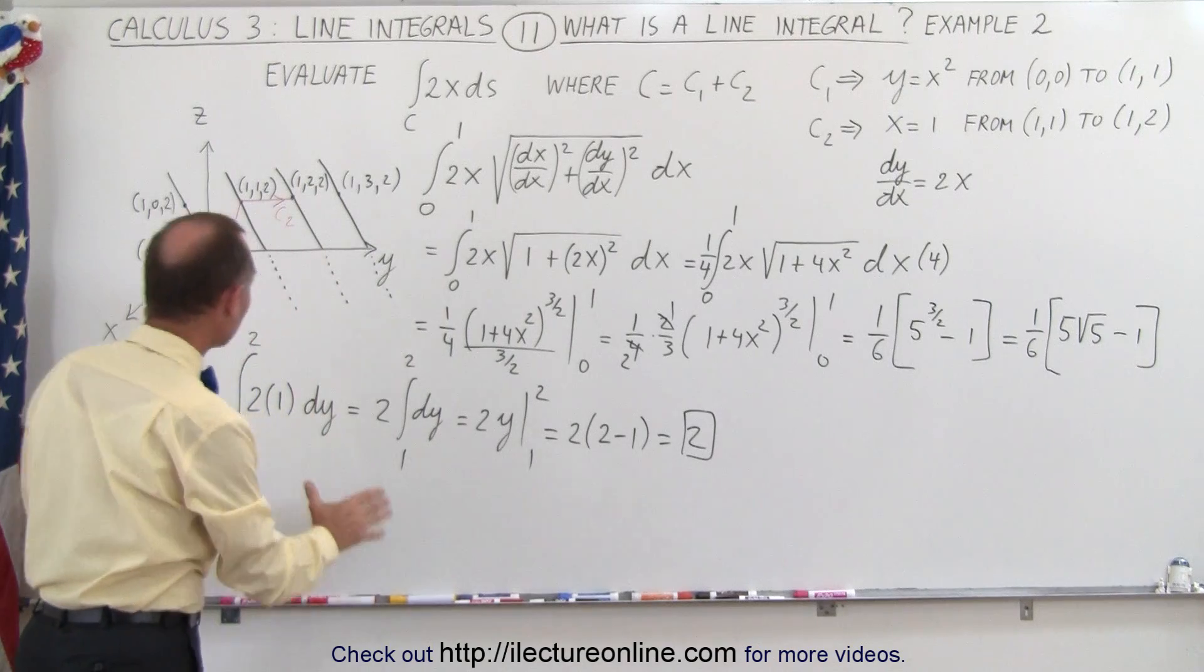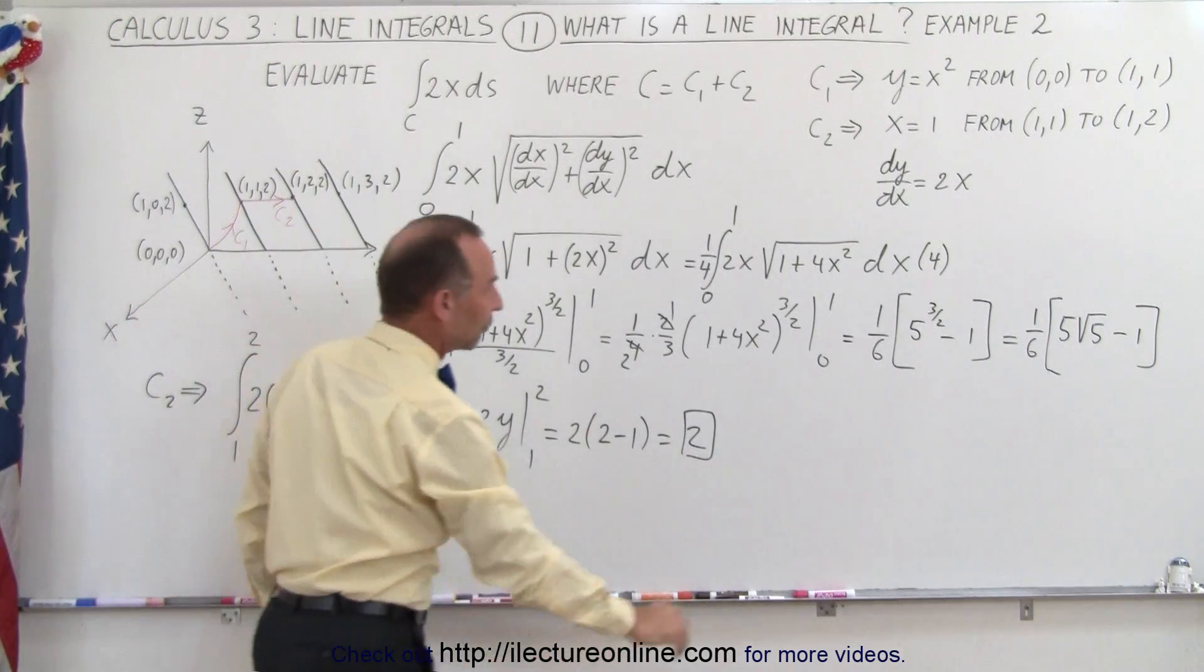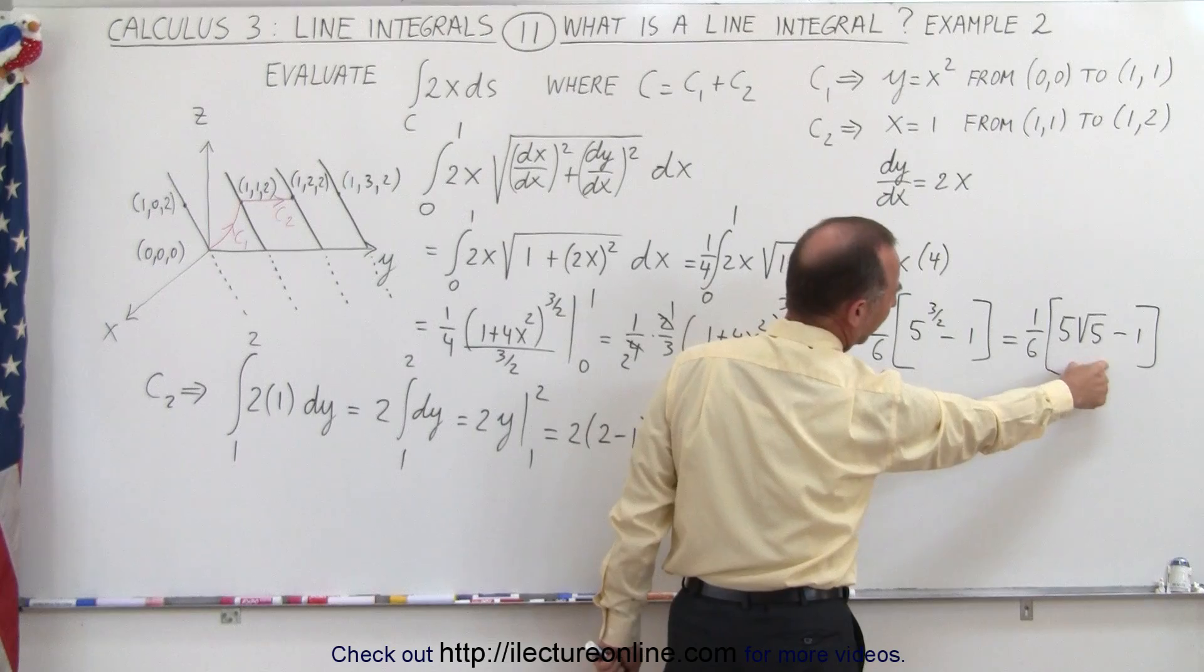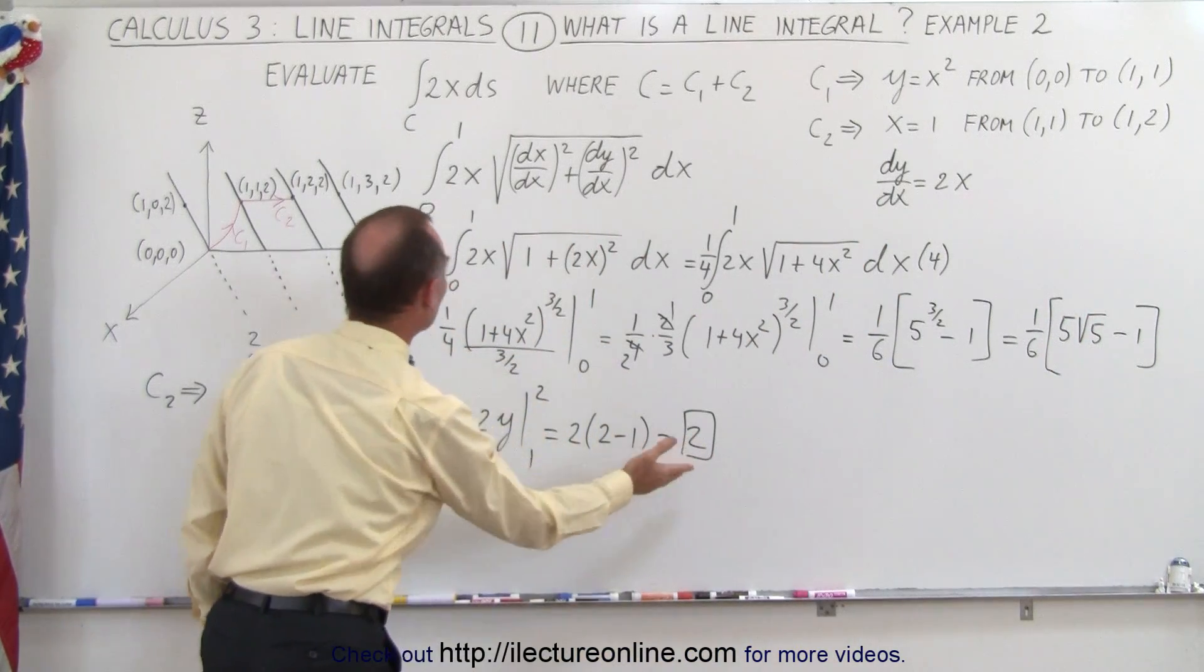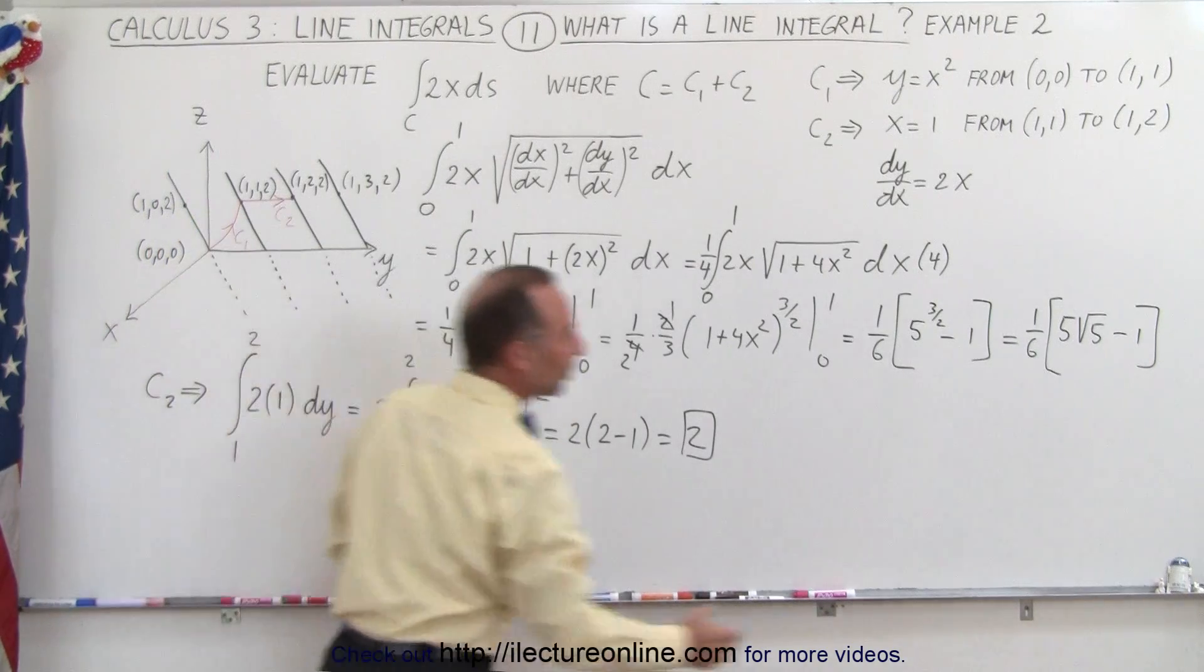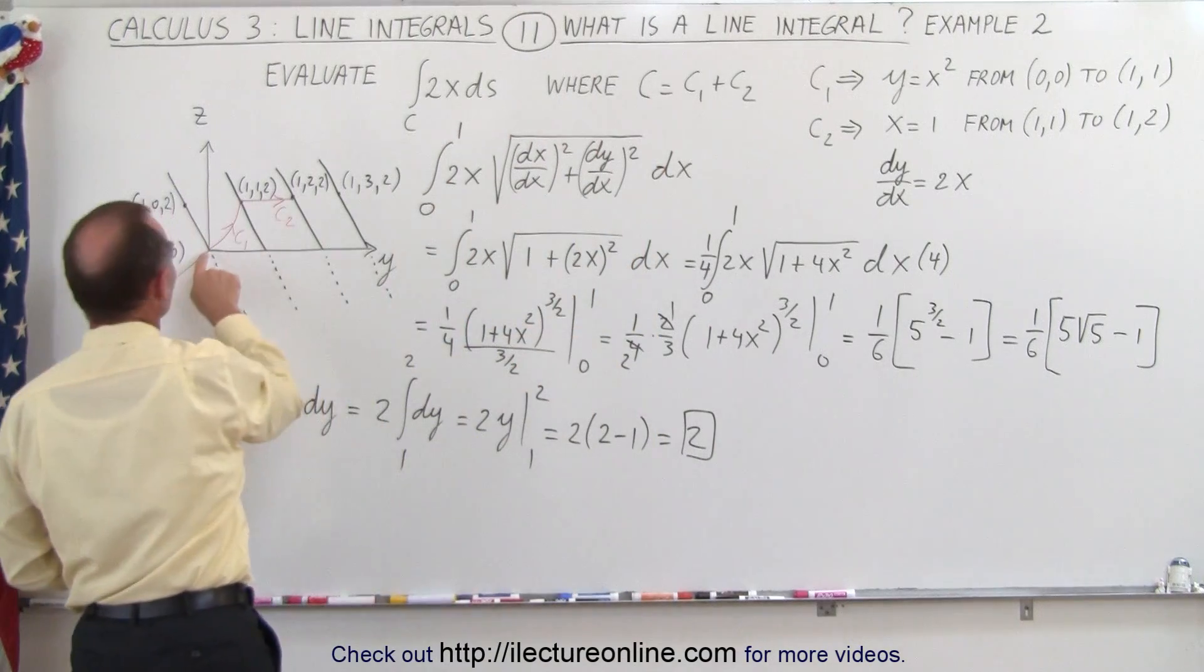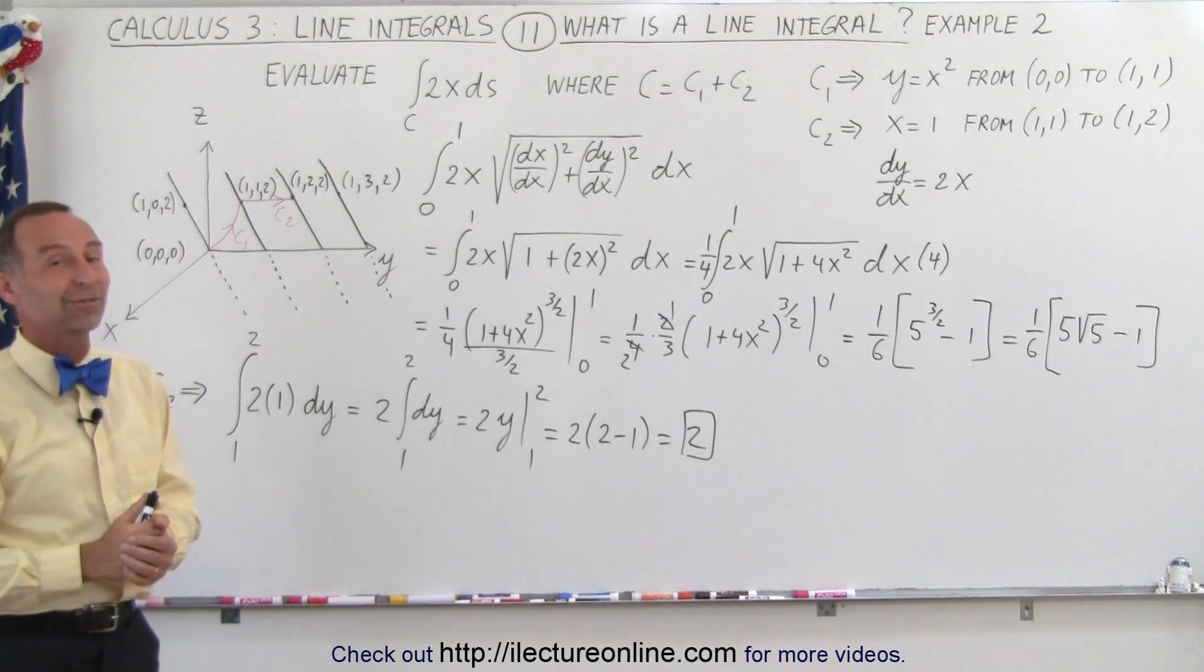So that's the solution for the second part, when we integrate from here to here, and the solution of the first part is equal to this quantity right here. The square root of 5 times 5 is about 11, so this is about 1 and a half or 2, and this is another 2, so for the total, when we add the two together, we simply would add this quantity to this quantity, to then account for the entire line integral from the origin to this point right there. And that's how it's done.